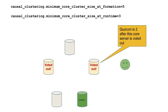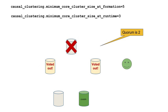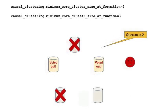Suppose another core server loses its connectivity. At this time, the cluster still has quorum and can vote out this second core server. But from now on, quorum is now 2. If one of the core servers that is part of the quorum shuts down, the cluster is still operable for updates because a quorum of 2 is still maintained. But if another core server shuts down, the cluster loses quorum and is now inoperable for updates. At least one of the core servers originally part of the cluster must be restarted for the cluster to be operable again.